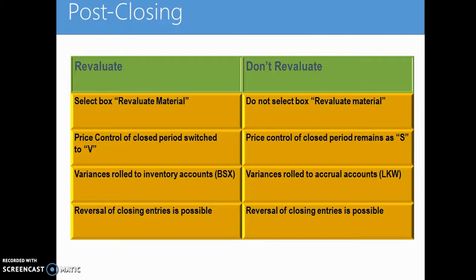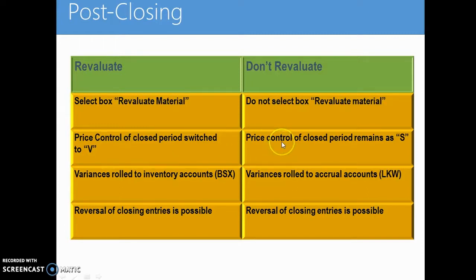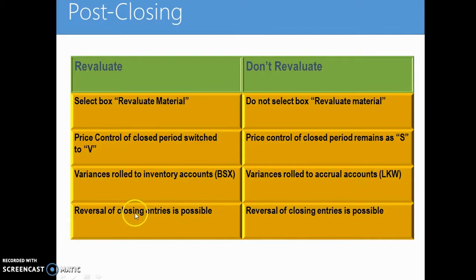Post-closing. You have two options in the post-closing step of a material ledger: one is to revaluate, and the other is not to revaluate. If you revaluate, you need to select the box called Revaluate Material. If you don't revaluate, you do not select this box and the material is not revalued. If you revaluate, the price control of a closed period switches to V. If you don't revaluate, the price control remains as S. If you revaluate, the variances of that product are rolled into inventory accounts configured in transaction key BSX. If you don't revaluate, the variances are rolled to accrual accounts configured in transaction key LKW. Whether you revaluate or not, you can reverse the closing entries that have been posted.